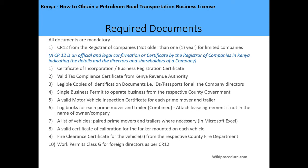The required documents are as follows — note that all documents are mandatory, and if applying online, ensure you have scanned copies. You need a CR12 from the Registrar of Companies, which must not be more than one year old. The CR12 is an official legal confirmation from the Registrar of Companies of Kenya indicating the details of directors and shareholders. You also need a certificate of incorporation or business registration certificate, and a valid tax compliance certificate from the Kenya Revenue Authority.